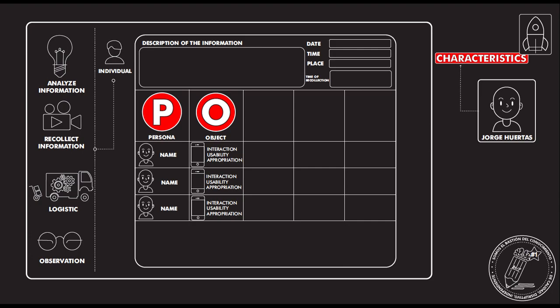Then objects. If this person is interacting with any kind of object, you will describe that. You will describe the usability and you will describe if they are appropriating the use of that component, especially when you are testing something. But if you are just getting empathy, you will want to follow all the behavior of the persons and which objects they are interacting.